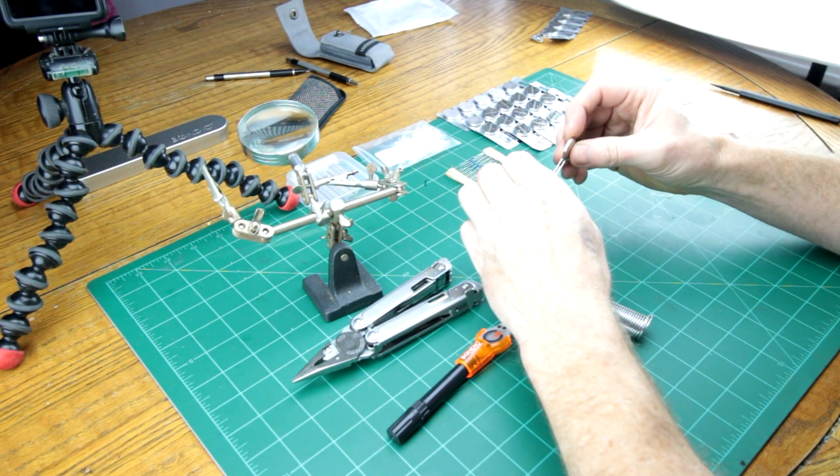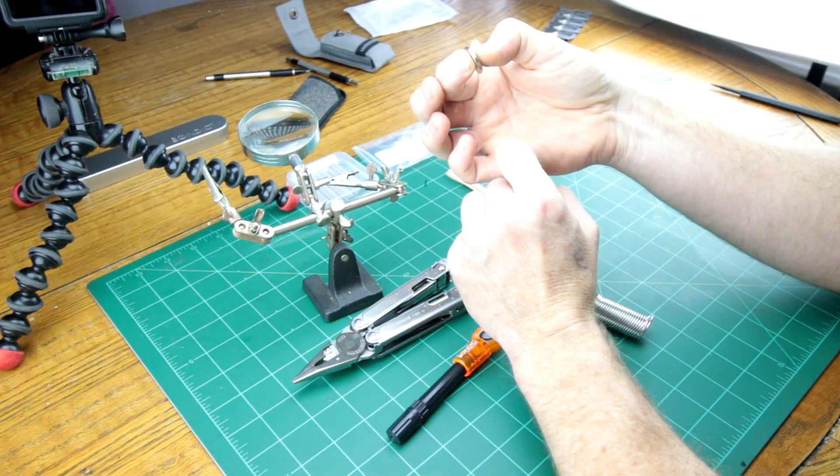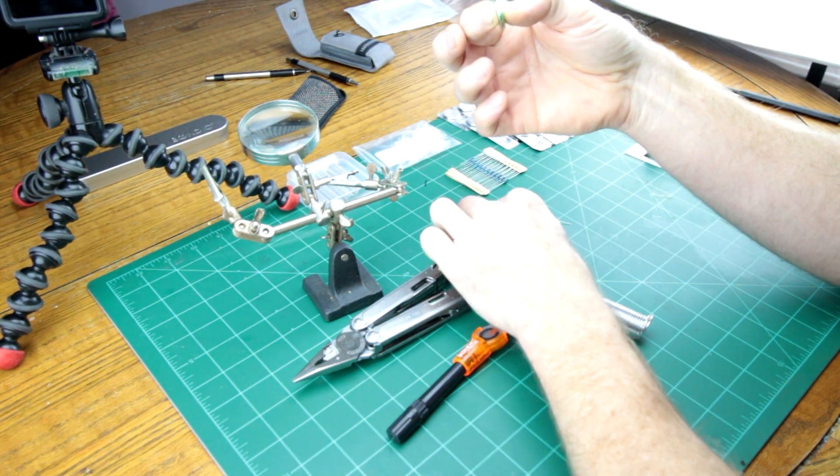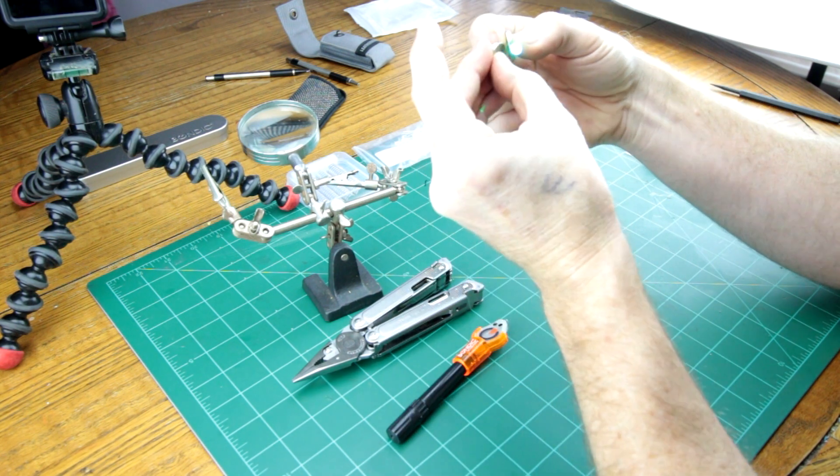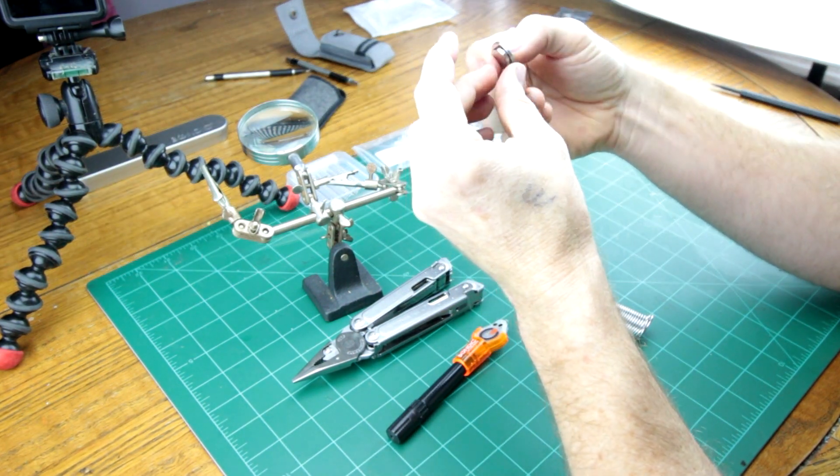Normally most of the time people make the little throwies, they'll just slap an LED on a battery, put a magnet on it, wrap it in some tape and be done. And you could do that with these. It would work.